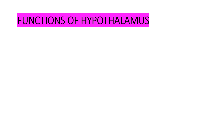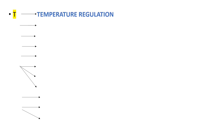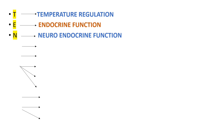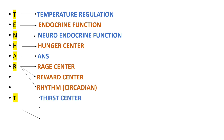Coming to our main topic — functions of hypothalamus. We have a mnemonic: TEN HEARTS (T-E-N-H-A-R-T-S). T stands for temperature regulation, E for endocrine function, N for neuroendocrine function, H for hunger center, A for autonomic nervous system, R for reward center and circadian rhythm, T for thirst center, and S for satiety center and sexual responses.